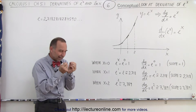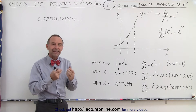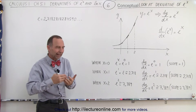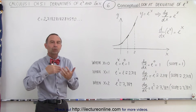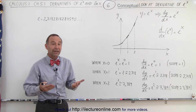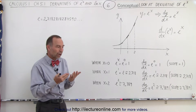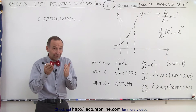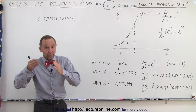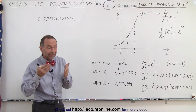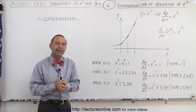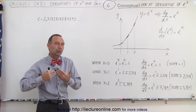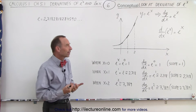That gives us an insight into the meaning of the natural number e. That's the natural growth rate of anything where the growth, which is represented by the slope of the function, is equal to the function itself. That's why it's the natural growth rate.